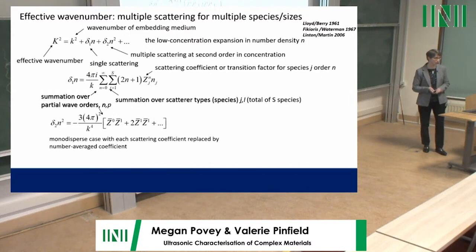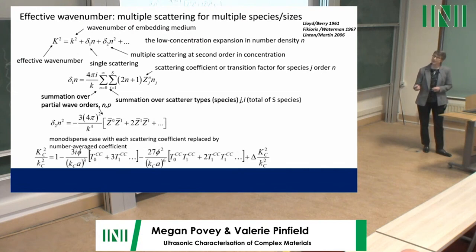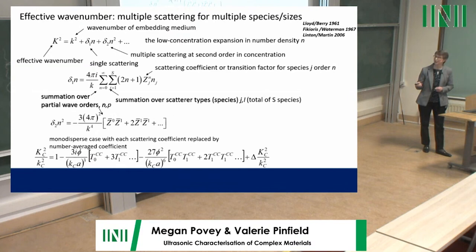Effectively we replace all scattering coefficients or T-matrix entries with expressions that are functions of the concentration and all of the scattering coefficients. The result is an expression for the effective wave number as a function of concentration and the T-matrix components, with an additional correction term.